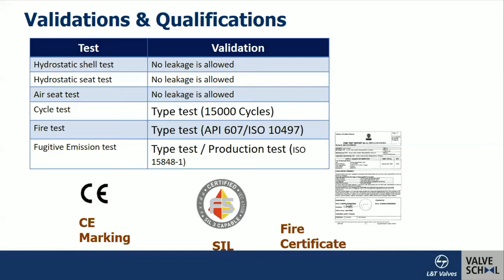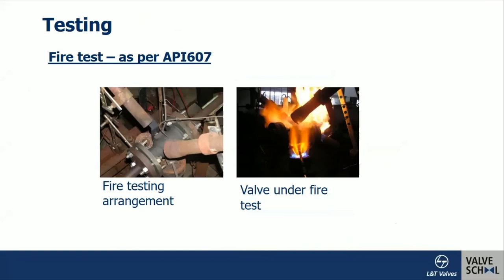Fugitive emission testing is now a standard requirement for all valves — multi-turn valves like gate and globe, and soft-seated valves like butterfly and ball valves. Emissions through the stem must be less than 100 ppm. Helium leakage testing is performed as a prototype test, and is also possible for production testing. Valves are also SIL-certified, as most valves today are used with actuators. The failure rate must be analyzed and must be well within the specified limit.